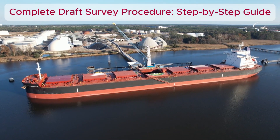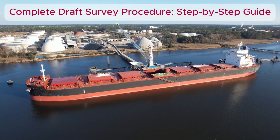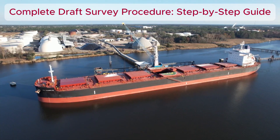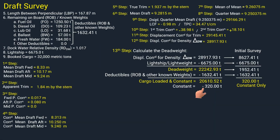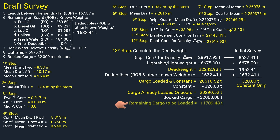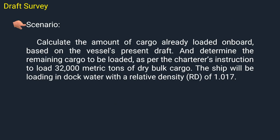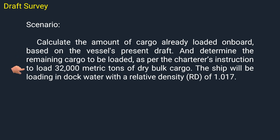In this video, we'll guide you through the step-by-step process of draft survey calculations. We'll cover the entire procedure, starting with draft corrections, calculating the amount of cargo already loaded on board, and all the way to determining the remaining cargo to be loaded. We'll calculate the amount of cargo already loaded based on the vessel's present draft, then determine the remaining cargo to be loaded as per the charterer's instruction to load 32,000 metric tons of dry bulk cargo.